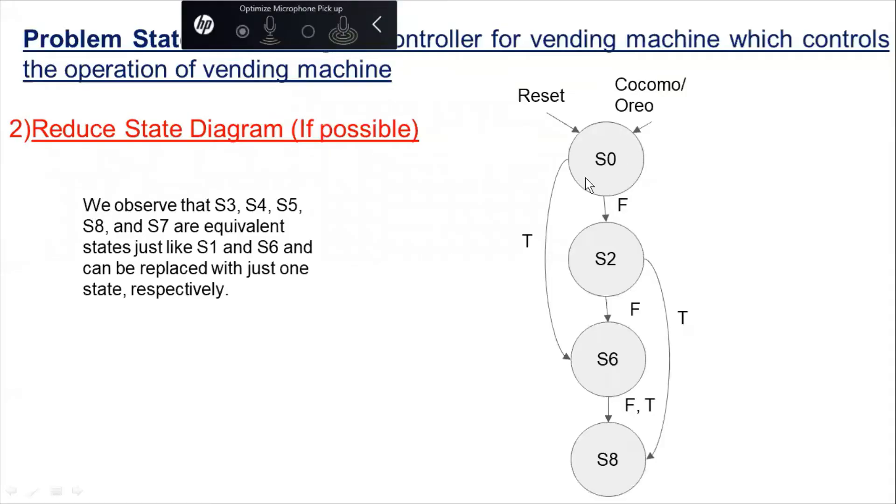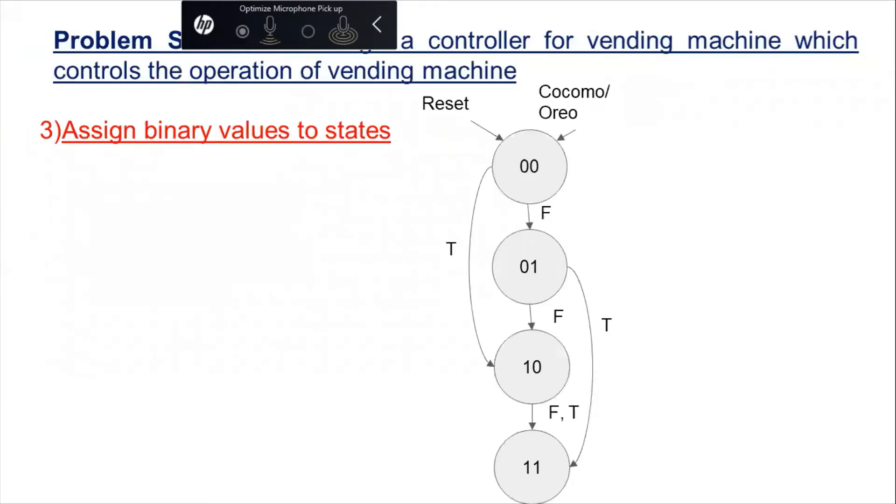So by now we have a finite state machine with finite number of states and we will encode each state with two bits. That will help us to move forward towards our logic implementation.